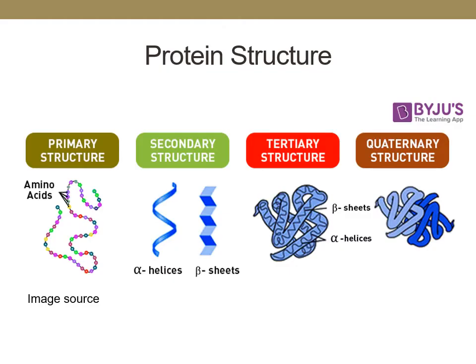Recall that proteins have four levels of structure. Amino acids are joined together on the ribosome to produce the primary protein structure. The primary structure folds upon itself to form the secondary structures — alpha helices or beta sheets. The amino acids further interact to continue folding and form a globular 3D tertiary structure. Some tertiary structures act alone, and others interact with one or more tertiary structures to form quaternary structures.